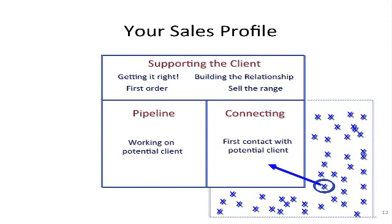Having got the first order and having got it right, there's more to it than that. What's the ongoing situation going to be? Obviously we want to develop the relationship, get more business, and have this become a long-standing account — somebody we can build a long-term relationship with who will always do business with us. Under supporting the client, there's getting it right, supporting the client, building the relationship, and selling the range — in other words, selling more products and services, getting ongoing business from them.